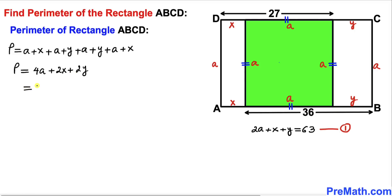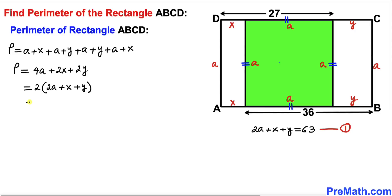Now we can see that 2 is a common factor, so let me factor out 2. In the parentheses we get 2A plus X plus Y. From equation one we know that 2A plus X plus Y equals 63, so I'm going to replace 2A plus X plus Y by 63. Therefore the perimeter turns out to be 2 times 63.